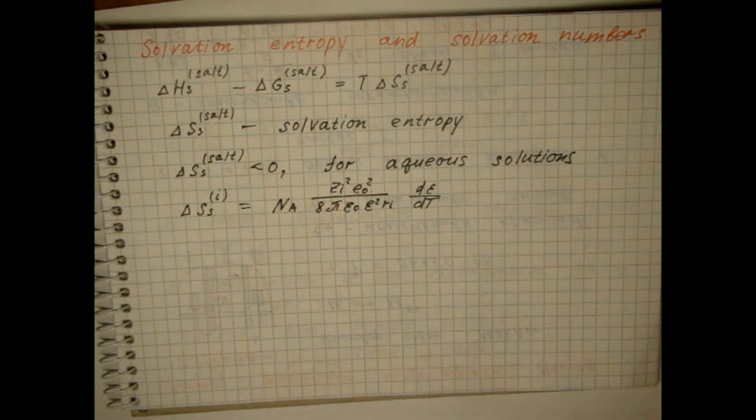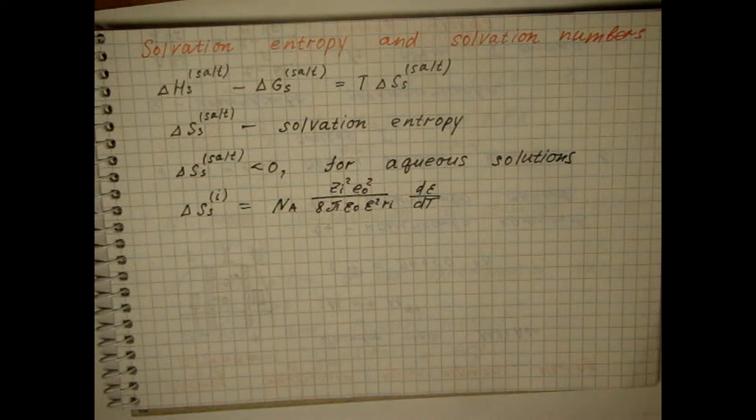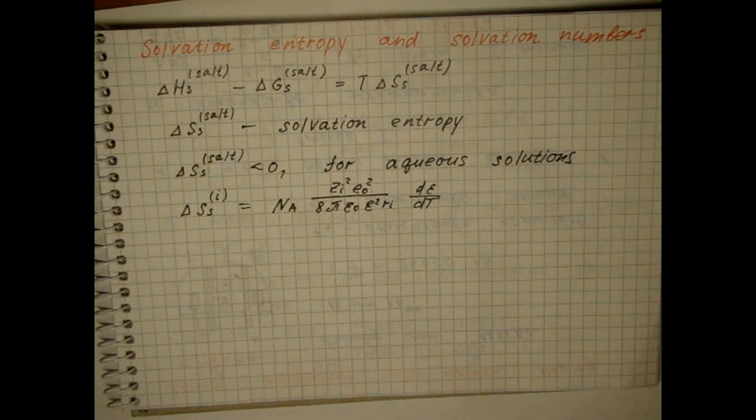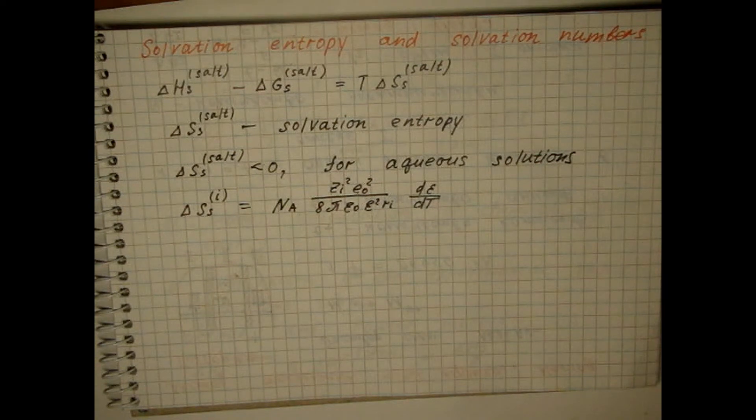Since the dielectric constant of water decreases with increasing temperature, this formula leads to negative entropy values. However, the values calculated on the basis of the Bohr model are several times smaller than the experimental ones.